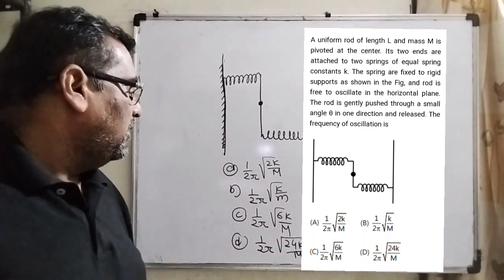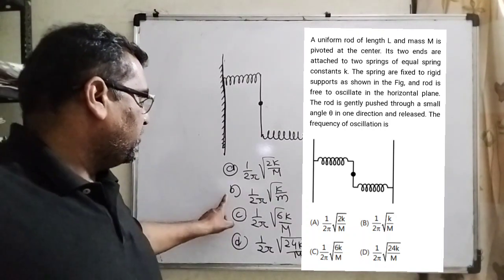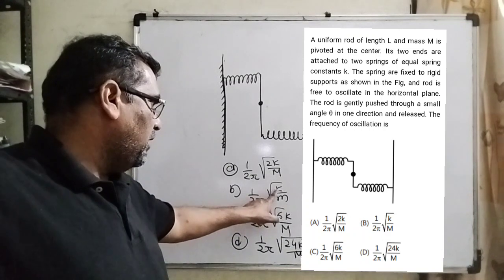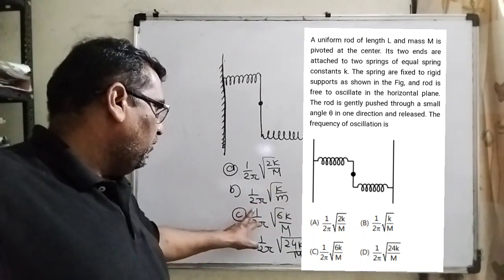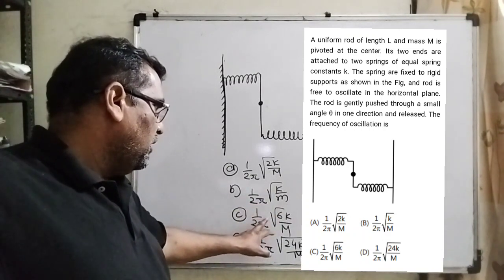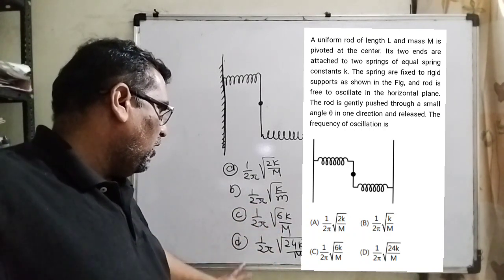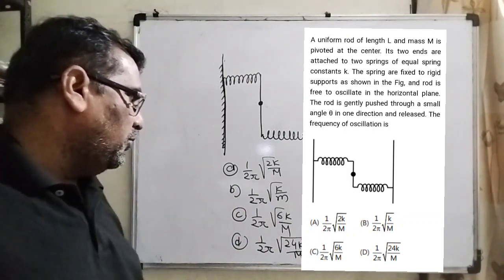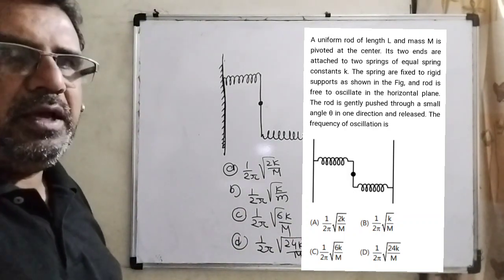The frequency of oscillation is — find the correct option. Option A: 1/2π × √(2K/M). Option B: 1/2π × √(K/M). Option C: 1/2π × √(6K/M). Option D: 1/2π × √(24K/M).